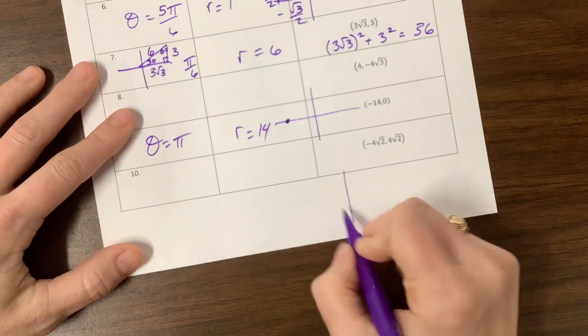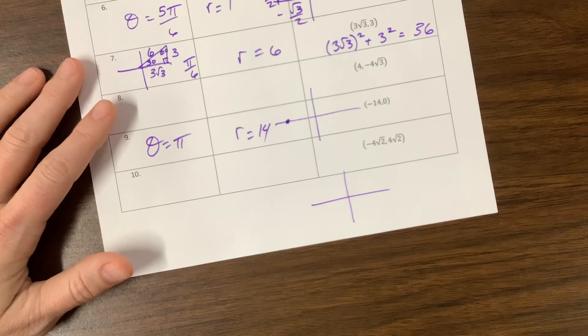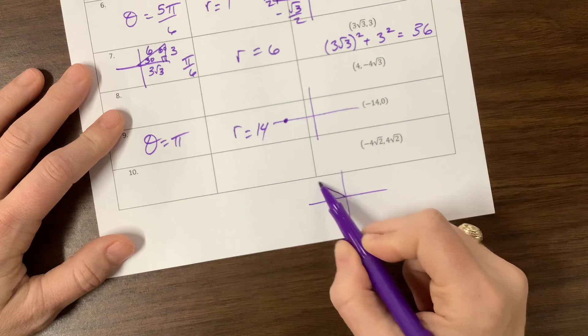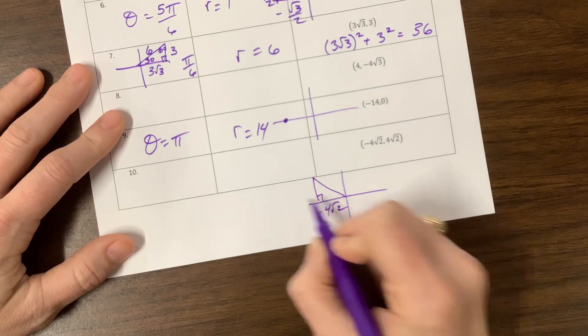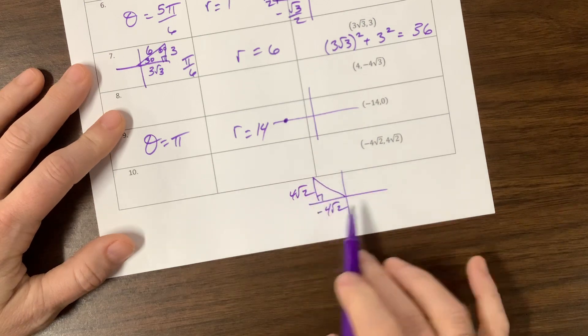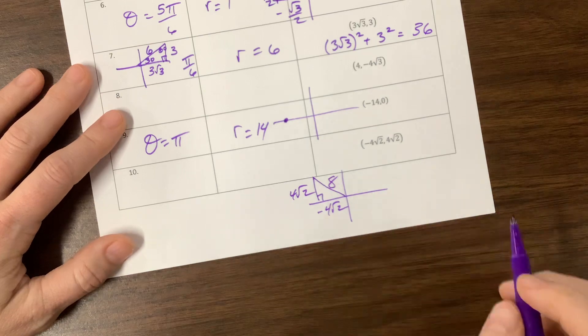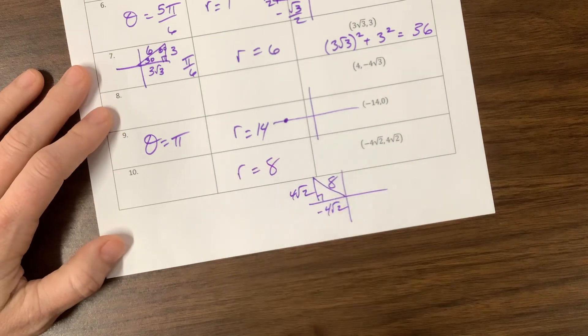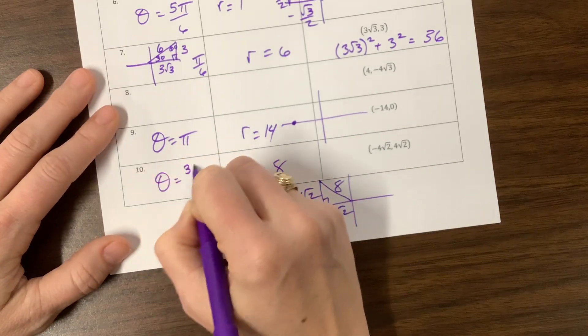This last one—when I see √2/2, I think in terms of 45-45-90, the π/4 family. Negative, positive puts me in quadrant 2. They match, so this is negative 4√2, this is positive 4√2. My hypotenuse is going to be √2 times this, so my hypotenuse is 8, which is my radius. The π/4 family in quadrant 2 is equal to 3π/4.